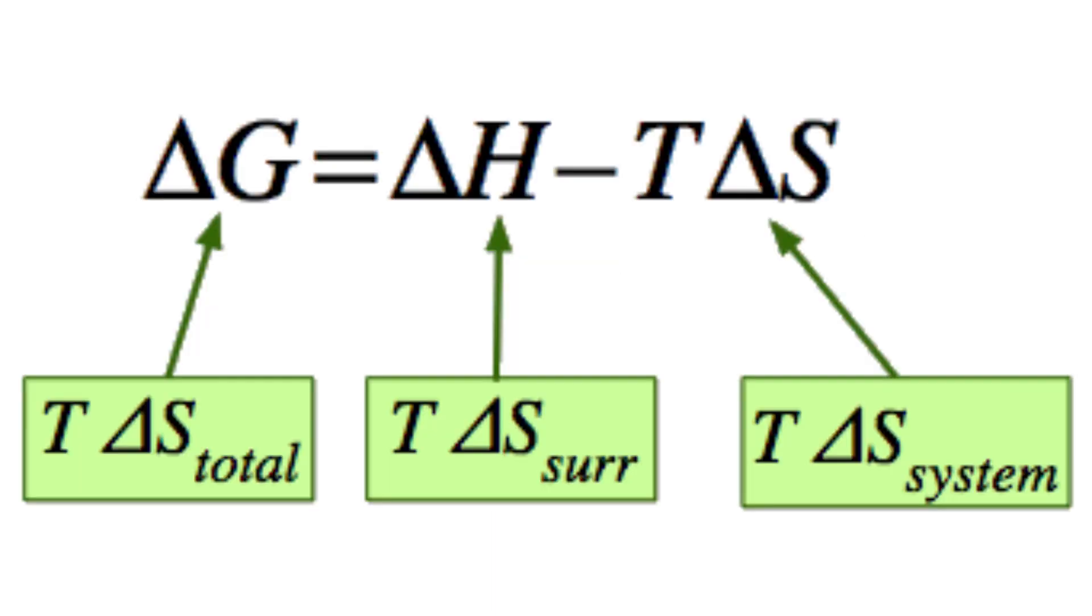Looking at the equation, let's summarize our spontaneous reaction examples. For the first example, the ball rolled down the slide, so delta H decreased, and so did Gibbs free energy. In the second example, the salt was dissolved in water, so the entropy increased, causing Gibbs free energy to decrease. And for the third example, the temperature increased, causing Gibbs free energy to decrease.